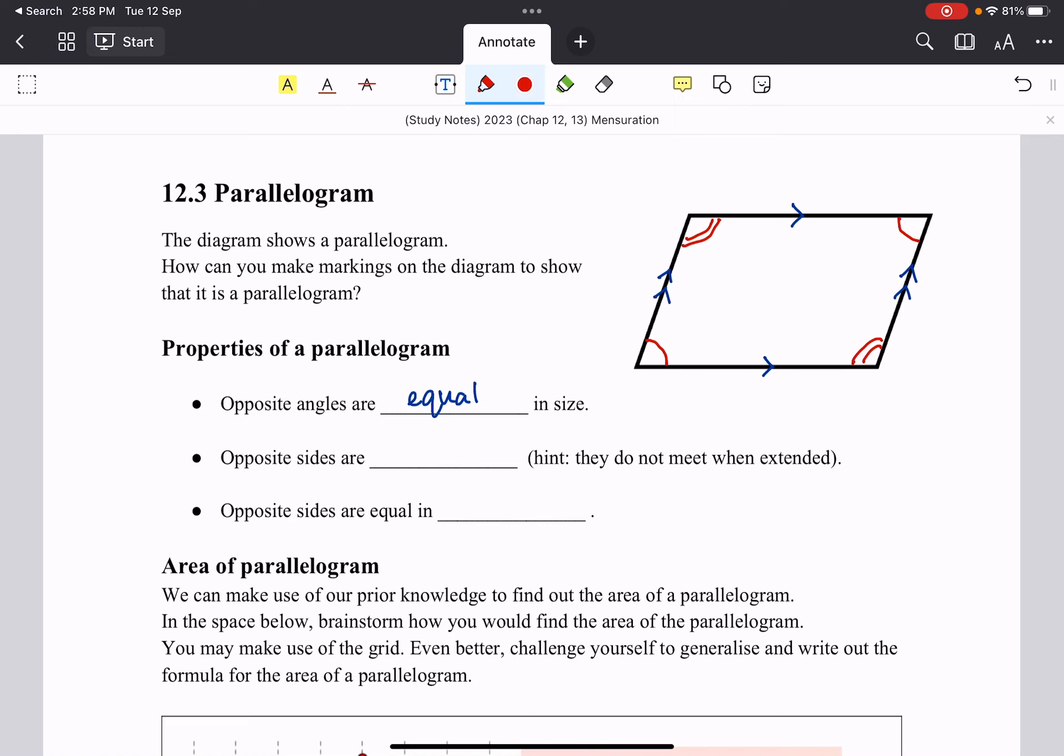Now, opposite sides are also parallel. That's why they are called parallelogram in the first place. They are parallel and the opposite sides are also equal in length. So this is what we need to know, some basic things. Of course, there are other properties of parallelogram. We will explore them at a later date.